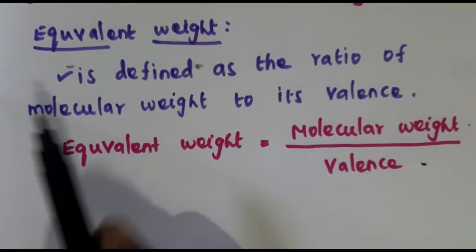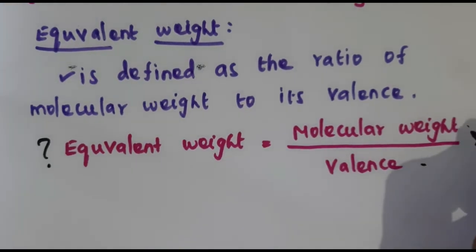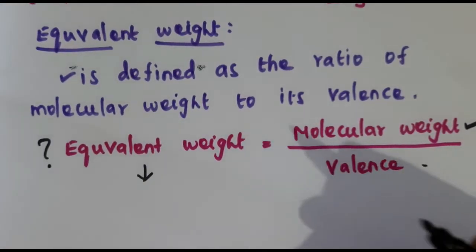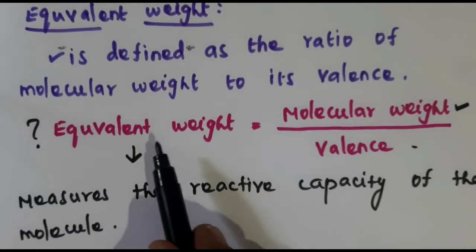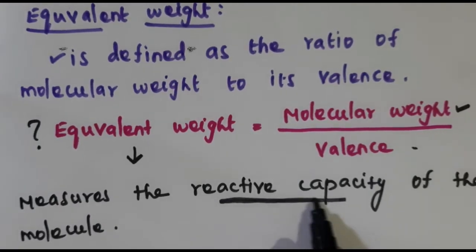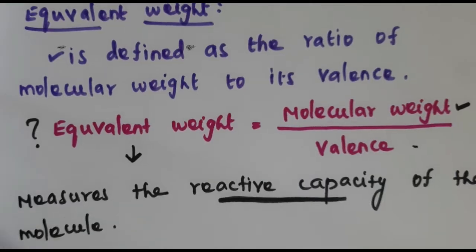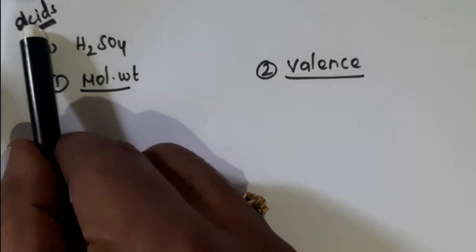You should know why we have to calculate equivalent weight of the compound. We know that molecular weight gives us the mass of the molecule. So what is equivalent weight? Why do we have to calculate it? The answer is equivalent weight measures the reactive capacity — the reactive capacity of the molecule. So let us see how to calculate equivalent weight for acids.